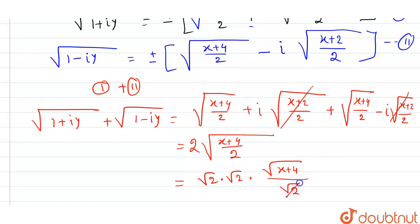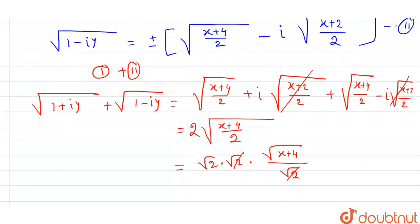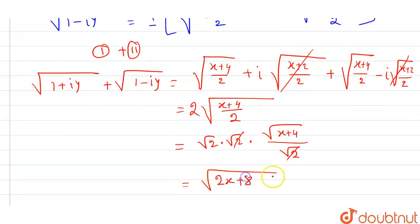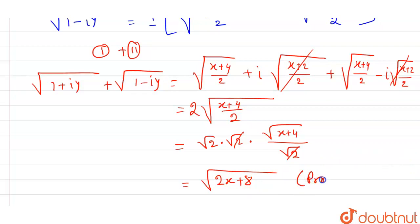So root 2 times root 2 gives 2, multiplied by (x+4) gives 2x plus 8. So root of (2x+8) minus root of (2x+8) equals zero. So we have completed the proof by this.